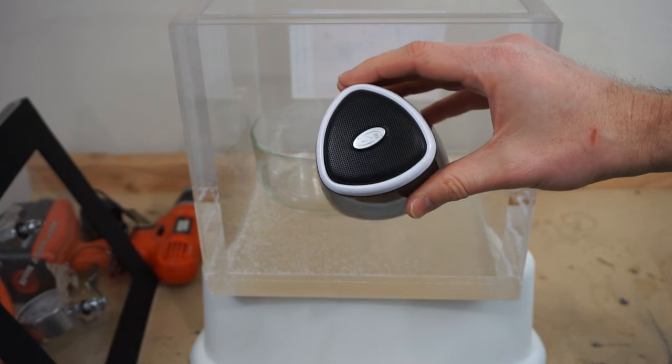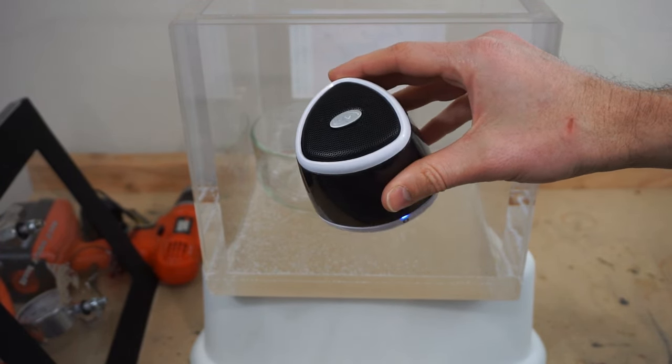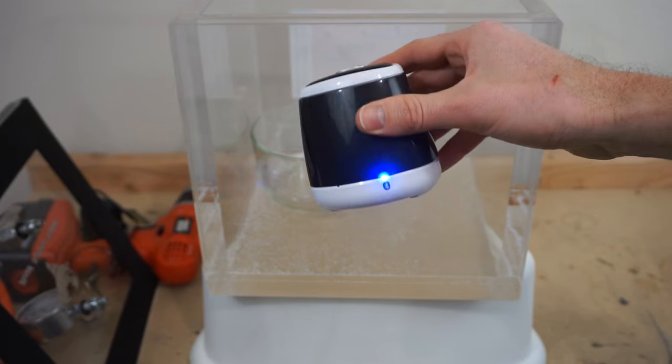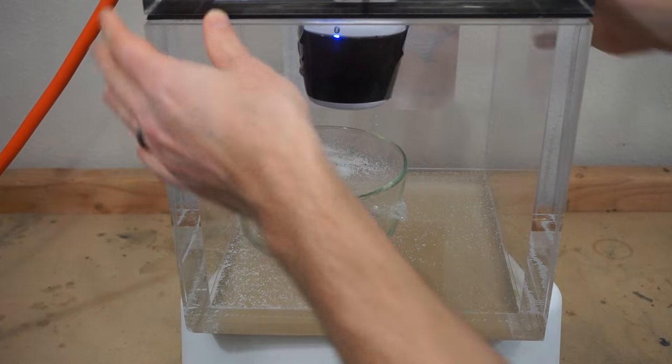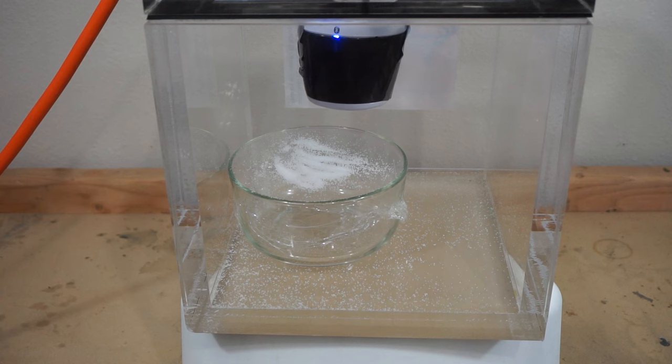So if this cone that's in the speaker doesn't have any air to vibrate against, what would happen? To visualize what I mean, I have my speaker hanging in the air here, because I don't want it to touch the chamber and vibrate through the chamber.